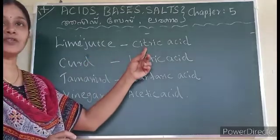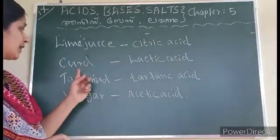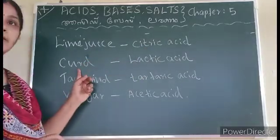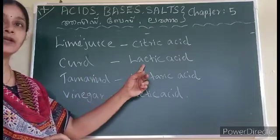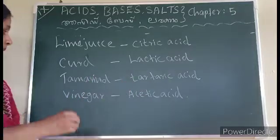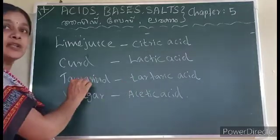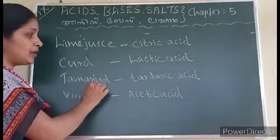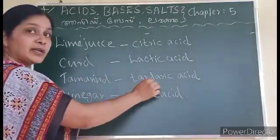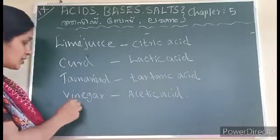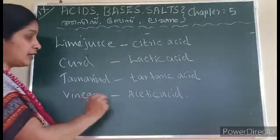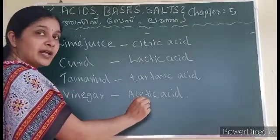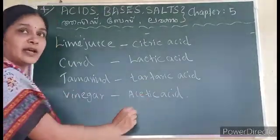Which acids are present in given substances? Lime juice contains citric acid. Curd contains lactic acid. Tamarind contains tartaric acid. Vinegar contains acetic acid.